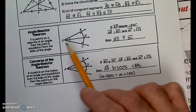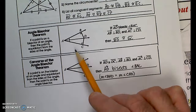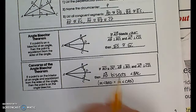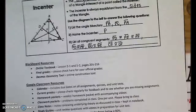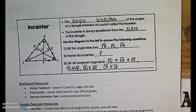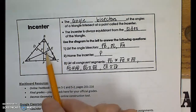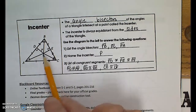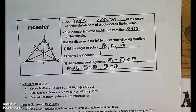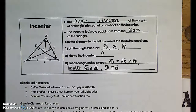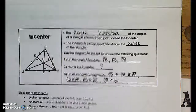Then we're going to study the angle bisector and some of its properties. We're going to use the angle bisector to construct an in-center — the point at which the angle bisectors all intersect — and it has some very interesting and neat properties. That's basically what we're going to be doing in this topic.